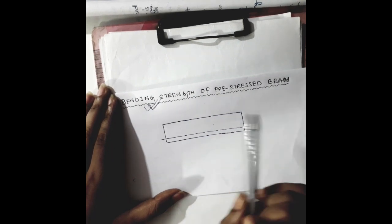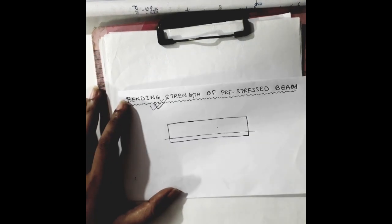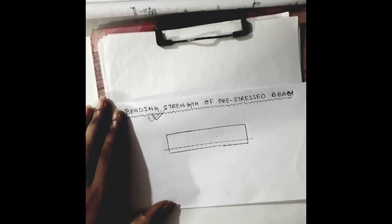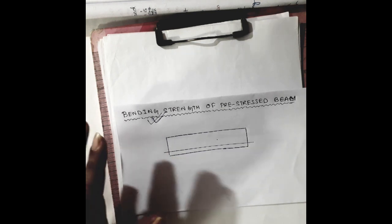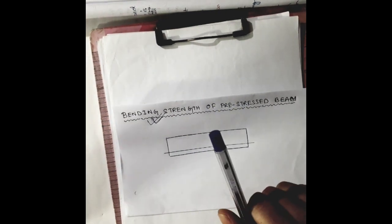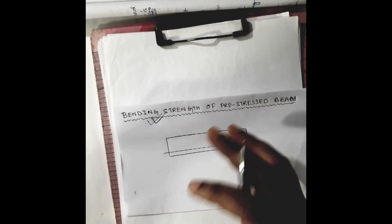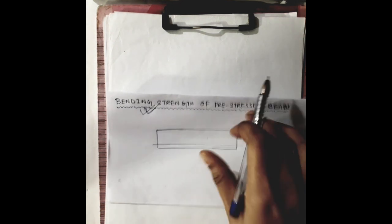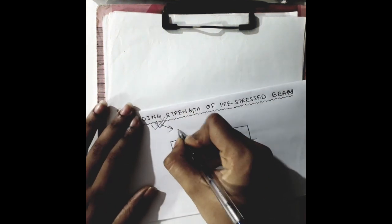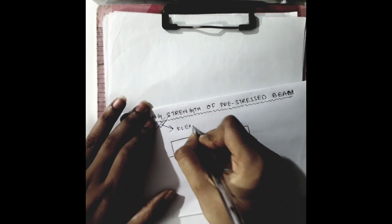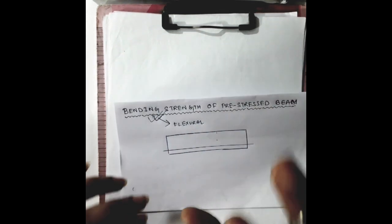We know that the most important single property of a structure is its strength, because a member's strength relates directly to its safety. Adequate strength of a pre-stressed concrete member is not automatically ensured by limiting stresses at the service load, so we need to know some factors on which the bending strength, or flexural strength, is depending.